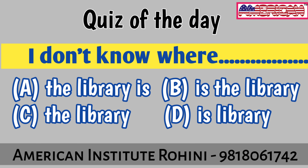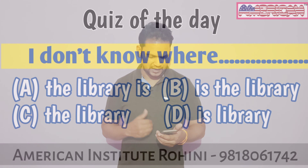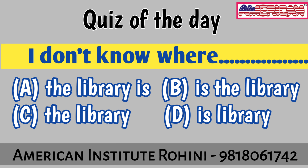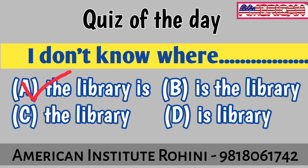The first option was: 'I don't know where the library is.' The second option was: 'I don't know where is the library.' The third option was: 'I don't know where the library.' And the fourth option was: 'I don't know where is library.' Many people chose option A — 'I don't know where the library is' — and that was correct.